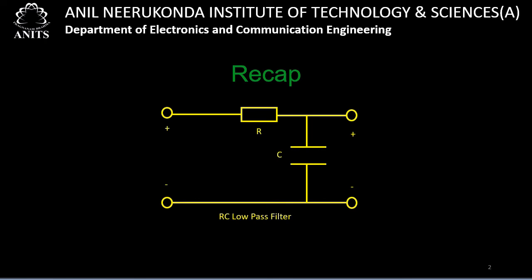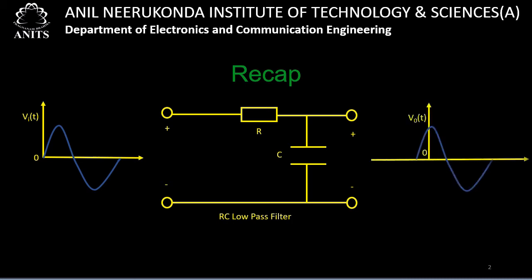In the last class we considered the RC low-pass filter circuit to which the input Vi(t) is a sinusoidal input, and we observed that the output is also sinusoidal. When the input is sinusoidal to a linear circuit, the output is also sinusoidal — the magnitude may be amplified and there might be some phase shift, but the shape of the output is the same as the shape of the input. The shape of the output is preserved when a sinusoidal input is passed through linear circuits.